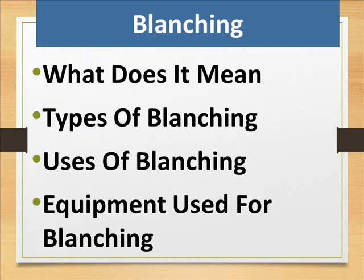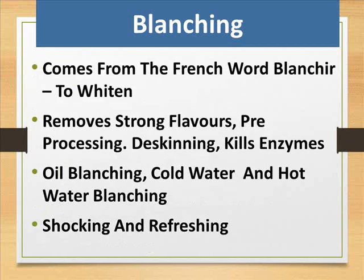Blanching — what does it mean? We look at types of blanching, uses of blanching, and equipment used for blanching. Blanching comes from the French word 'blancher', meaning to whiten. It removes strong flavors, is used as pre-processing, for de-skinning, and kills enzymes. Methods include oil blanching, cold water, and hot water blanching — including shocking and refreshing.